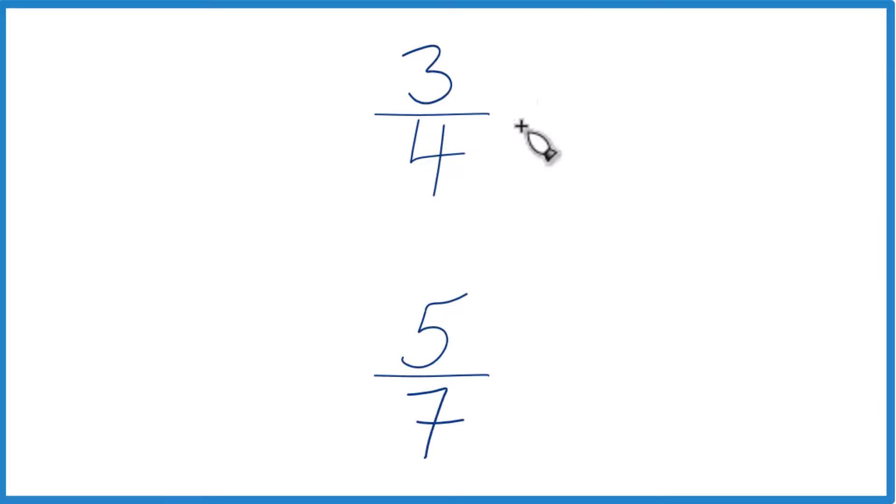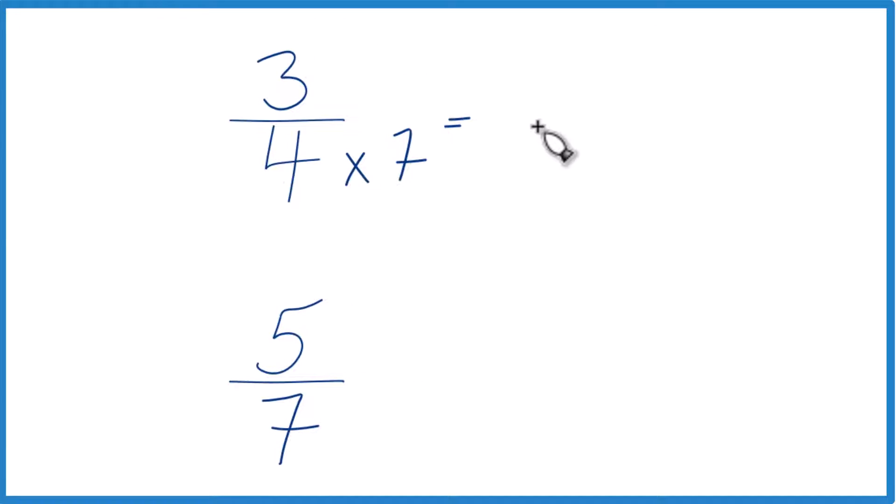We could also find a common denominator, something that 4 and 7 both go into evenly. So why don't we do this? Let's multiply 4 times 7. 4 times 7, that would equal 28.